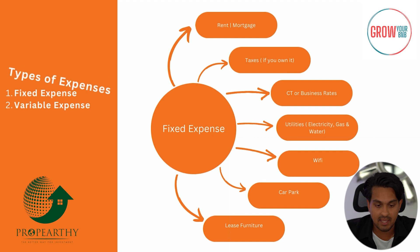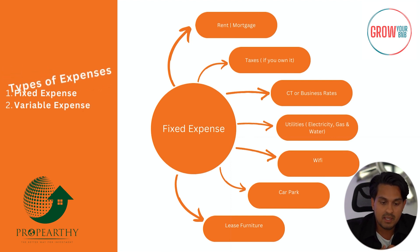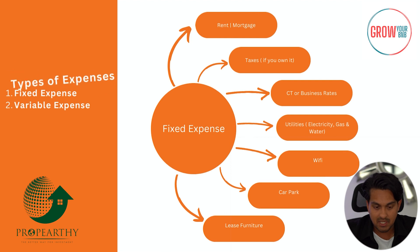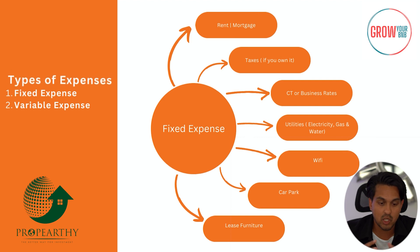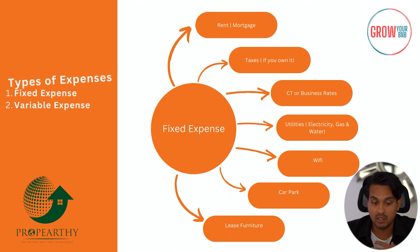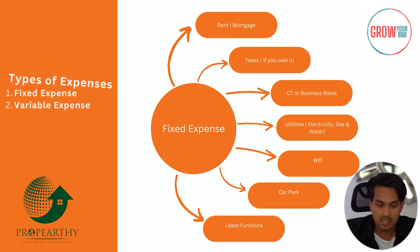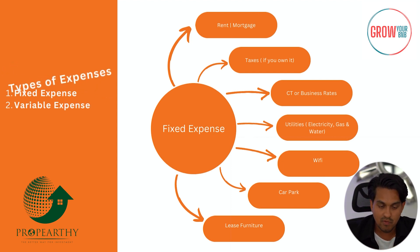Utilities — electricity, gas, and water — are kind of variable but you need to estimate them. If I'm trying to get someone a monthly booking, I want to understand the maximum utility bills for a full month's stay. Your WiFi is a fixed expense. If you've got a car park permit, that could be free or a cost. If you've leased your furniture, put that in per month. And any other fixed expenses like insurance — that needs to be included, giving you your overall monthly fixed expenses.